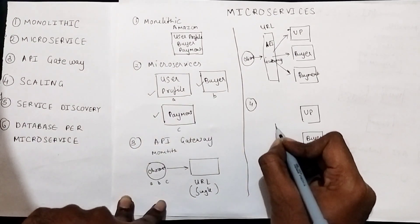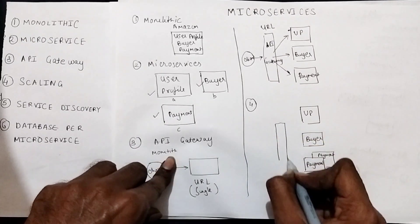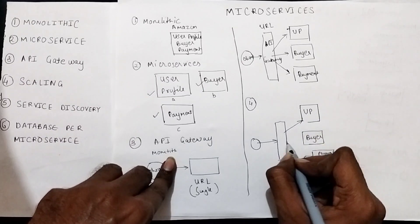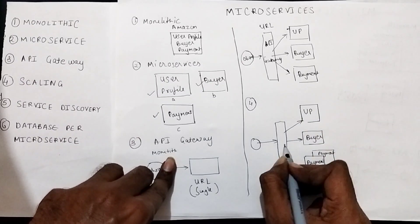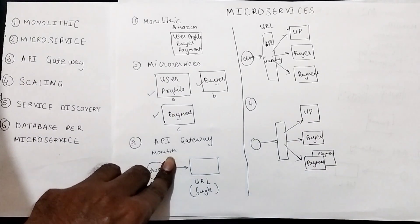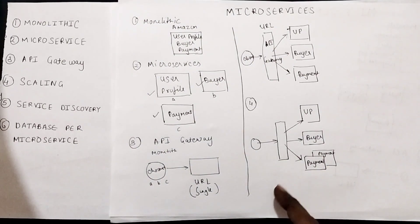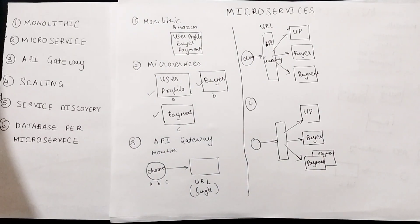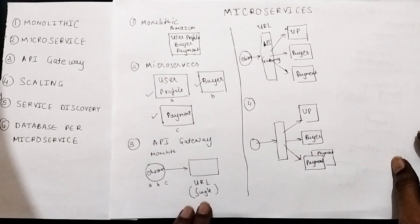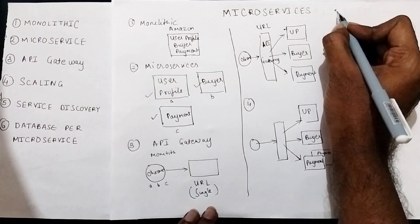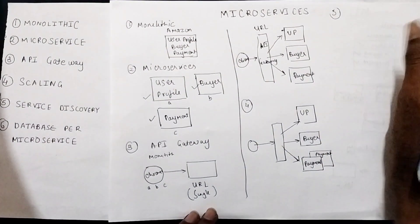There is an API gateway as usual, and when a request comes in it will be routed to one of the microservice instances. One of the key advantages of microservices is that you can independently scale individual components of your application. That is about scaling — now let's move to our fifth concept, which is service discovery.